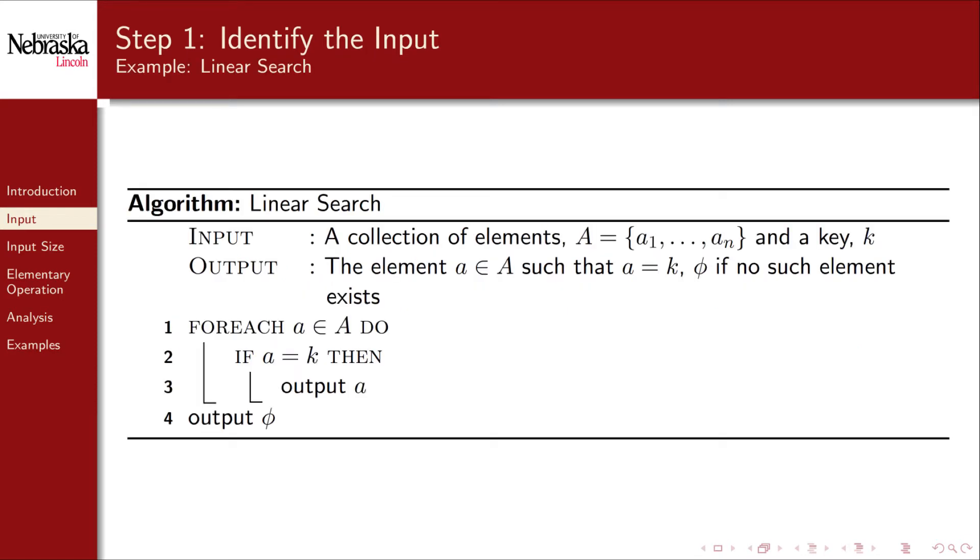To illustrate these two corner cases consider the example of linear search. Here we have two inputs, a collection of elements and a single key. The linear search algorithm iterates over the collection searching for a particular element that matches the key. In this case it would be more appropriate to consider the collection as the input and ignore the single key. It is larger and the algorithm's behavior will be more affected by the size of the collection and not the key itself.